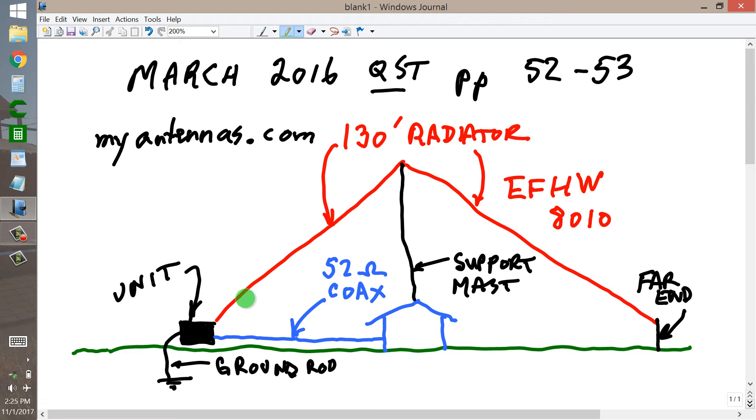What this thing does, is it takes a 130 foot wire, which would be a half wavelength on the 80 meter amateur band, the 3.5 megahertz band. And then, it matches the purely resistive, very high impedance of that, roughly, more or less, to 52 ohms for a coaxial feed line.